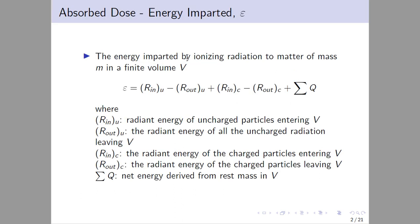First we look at the absorbed dose. The energy imparted E is the energy given to the molecule or to the cell. The energy imparted by ionizing radiation to a matter of mass m in finite volume V is defined by an equation where R_in_u is the radiant energy of uncharged particles entering V, R_out is the radiant energy of all uncharged radiation leaving V, R_in_c is the charged particle energy entering V, R_out_c is the radiant energy of charged particles leaving V, and Q is the energy derived from rest mass in V.